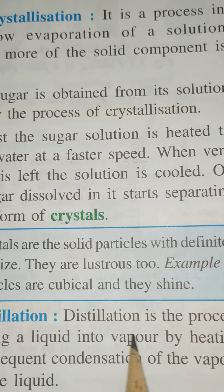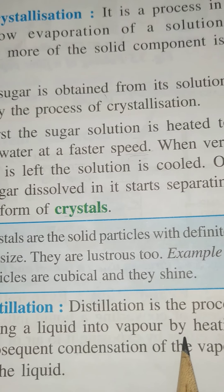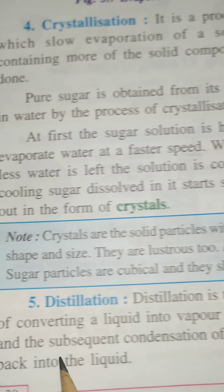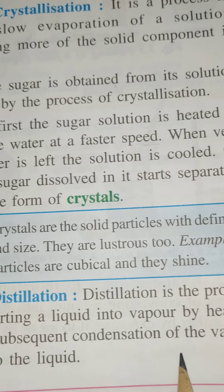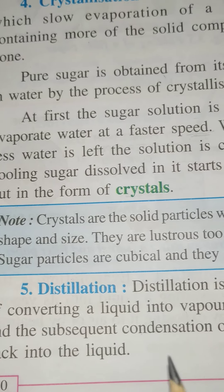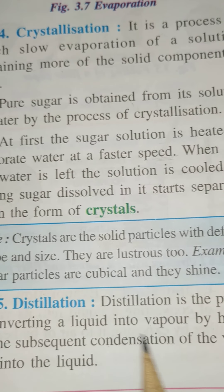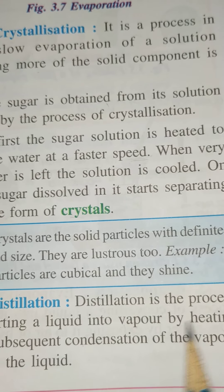So what is distillation? It is a process of converting a liquid into vapor by heating, and the subsequent condensation of the vapor back into the liquid. So here both processes take place: first we change the liquid into vapor by heating, and then we carry out condensation to get the liquid back.